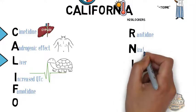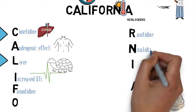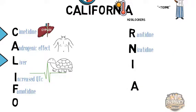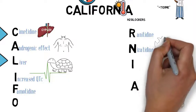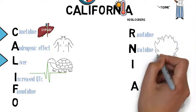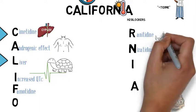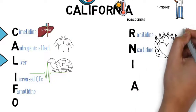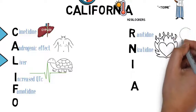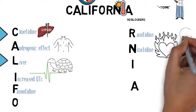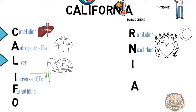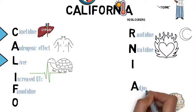Next we have N, which stands for nizatidine — also an H2 blocker. We use H2 blockers like these, or proton pump inhibitors, for breakthrough nighttime acid. Then A stands for adjust for renal disease with this drug group.